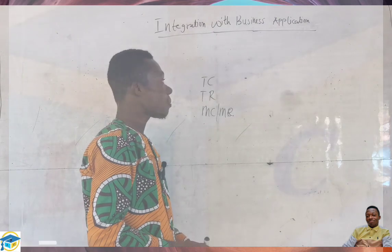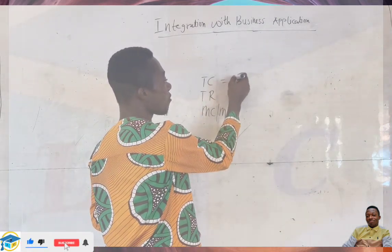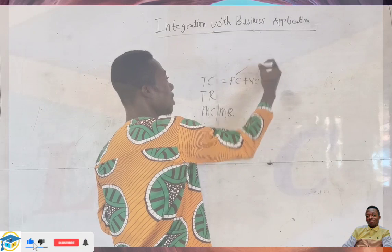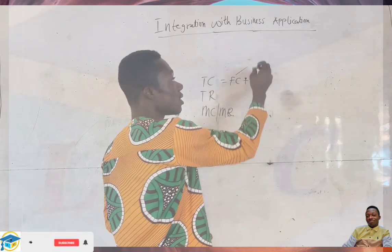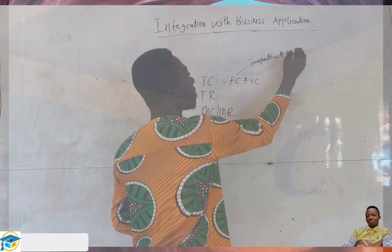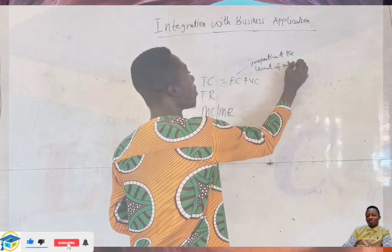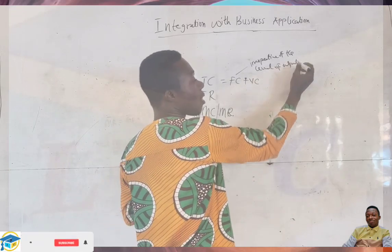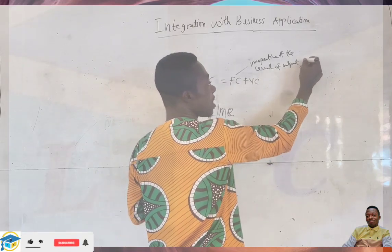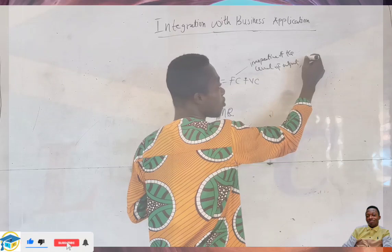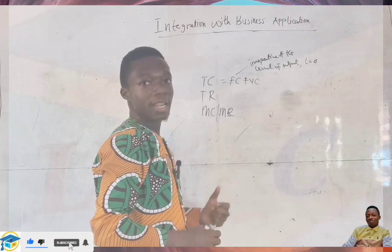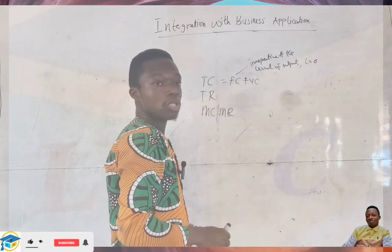We established that total cost should be equal to fixed cost plus variable cost. Fixed costs are those costs that remain constant irrespective of the level of output — meaning that whatever we produce, fixed cost remains something you cannot avoid. So if our production level is zero, fixed cost is still going to be incurred.